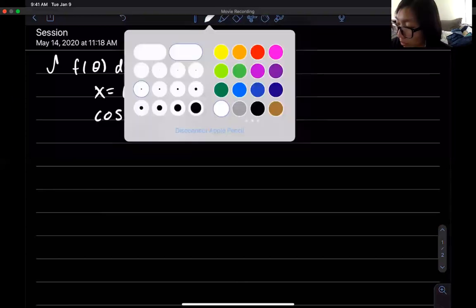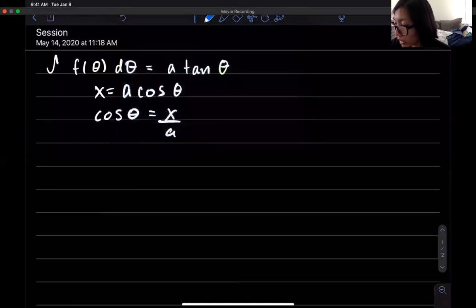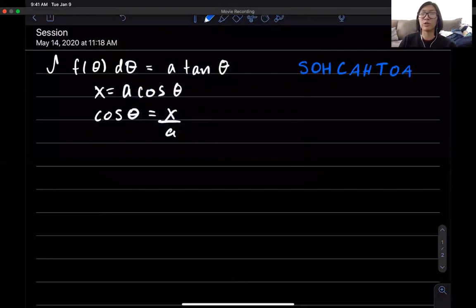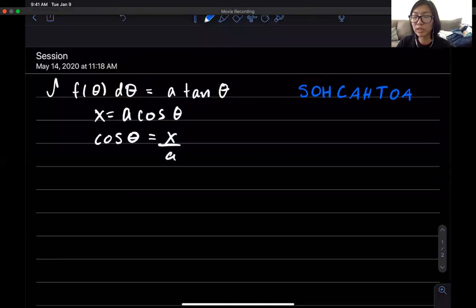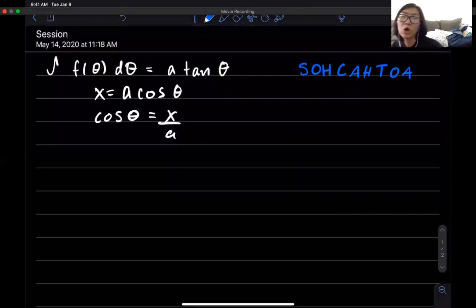So if you guys remember way back when we talked about SOHCAHTOA. With SOHCAHTOA what we have is we know that we have the cosine of theta right.